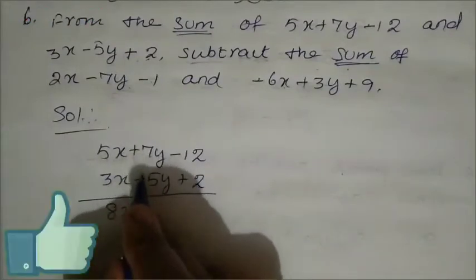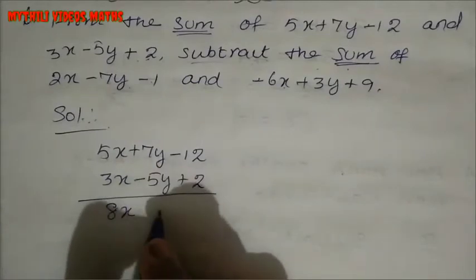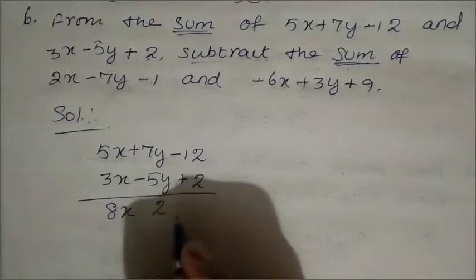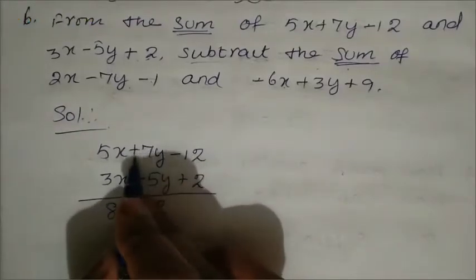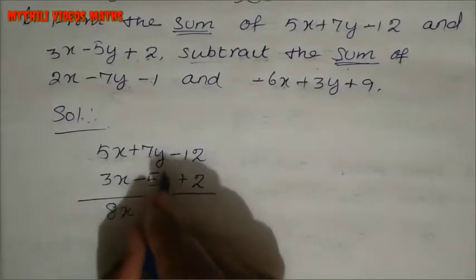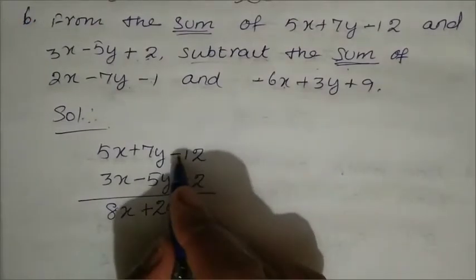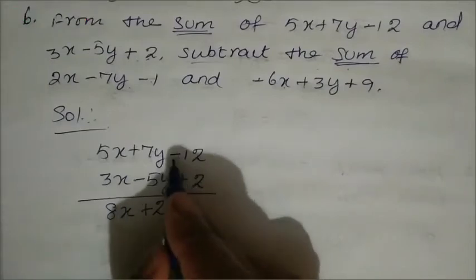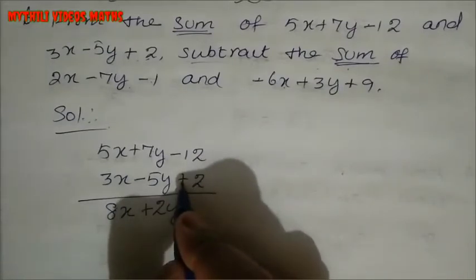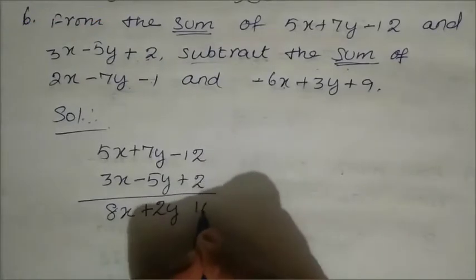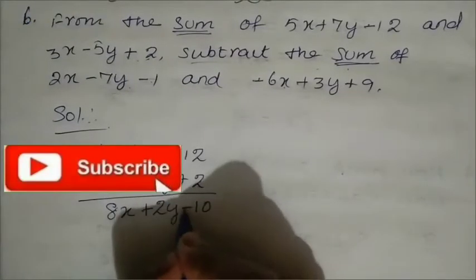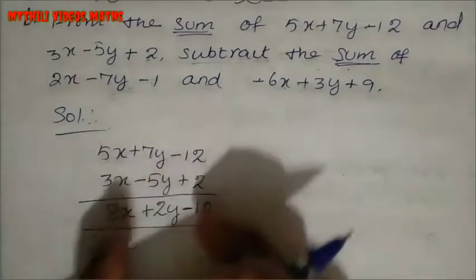For the y terms: plus 7 and minus 5 — different symbols, so we subtract smaller from bigger. 7 minus 5 is 2, and the bigger number is positive, so plus 2y. For the constants: minus 12 and plus 2 — different symbols, 12 minus 2 is 10, bigger number is negative, so minus 10. Result: 8x plus 2y minus 10.